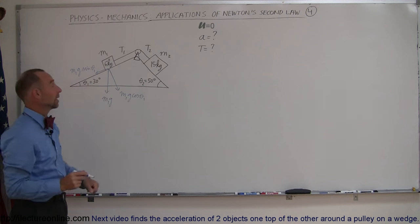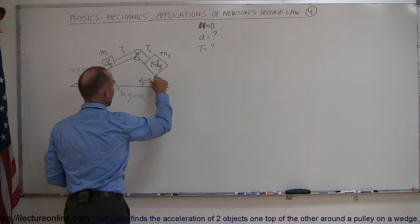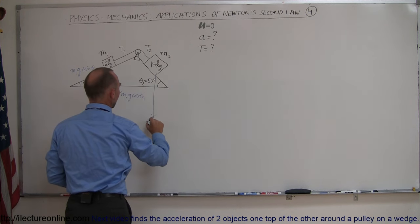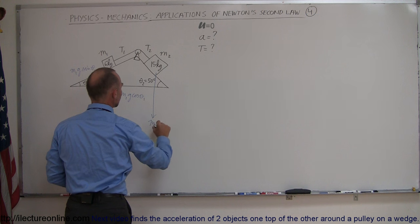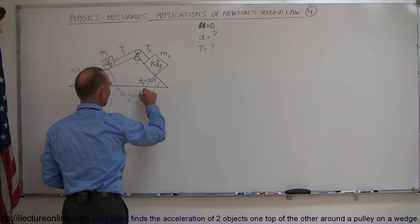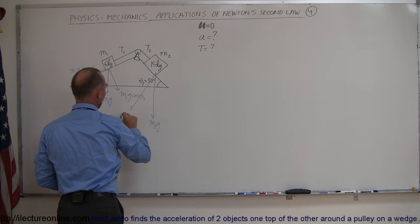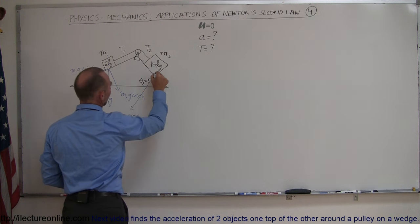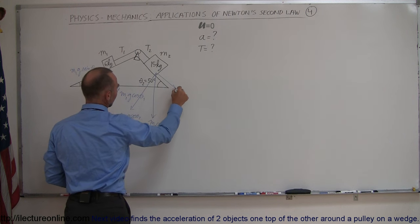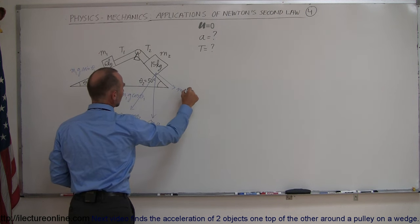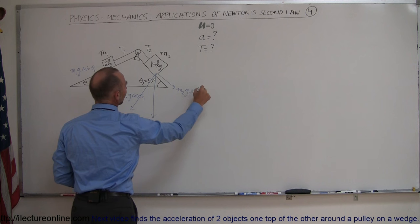Over here we can do the same thing with this mass. Here we have the weight pulling down which is m2g. We have the perpendicular component this way which would be m2g cosine of theta two and we have this component right here which is the m2g times the sine of theta two.